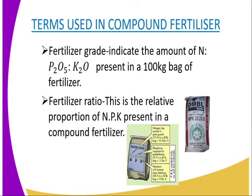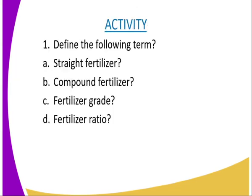Terms used in compound fertilizer: fertilizer grade indicates the amount of nitrogen, phosphorus pentoxide, and potassium oxide present in a 100 kg bag of fertilizer. Fertilizer ratio refers to the relative proportion of NPK — that is nitrogen, phosphorus, and potassium — present in a compound fertilizer.